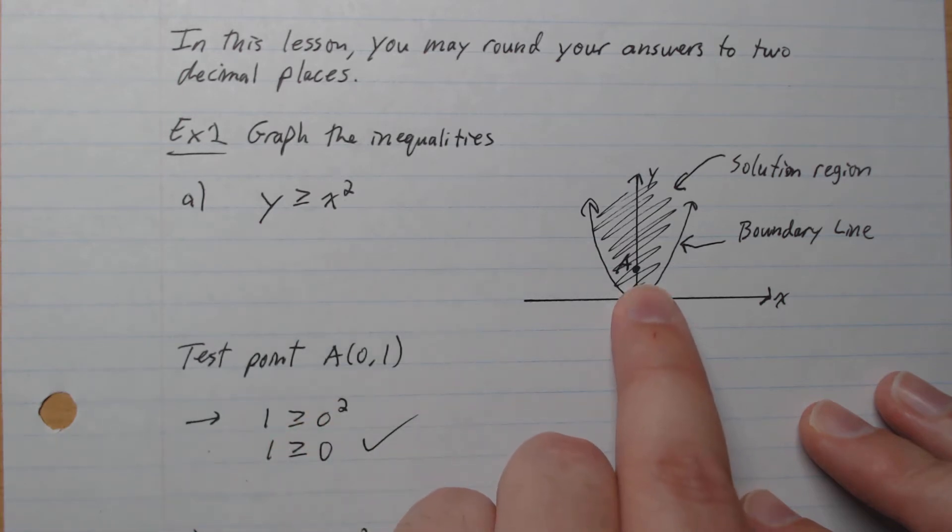So let's do a test point. If you can see it, there's an a here, which is (0,1). We plug in x equals zero, plug in y equals one, and we get one greater equal to zero, which is true. So this test point is part of the solution region, as we see in our graph.